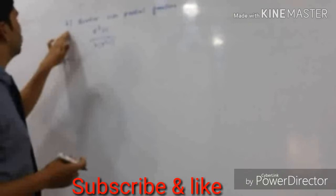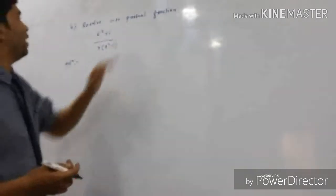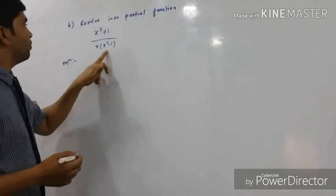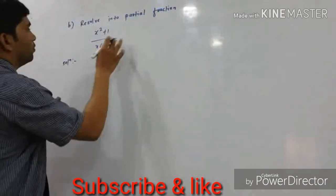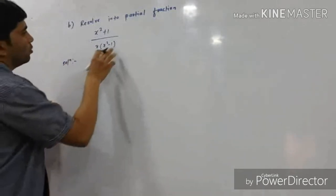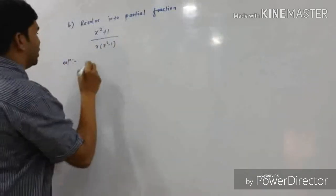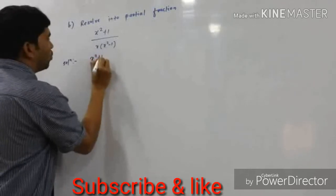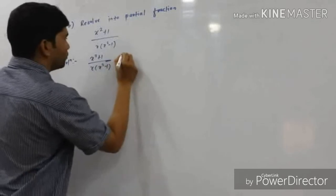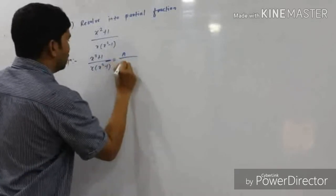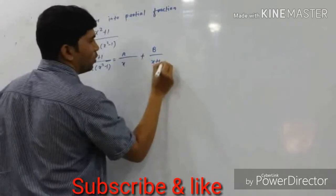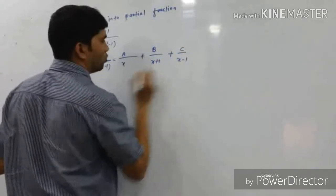Second question: resolve (x² + 1) / [x(x² - 1)] into partial fractions. We apply the first type of partial fraction, setting it equal to A/x + B/(x+1) + C/(x-1).